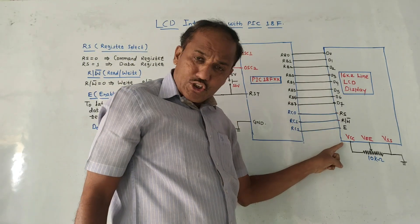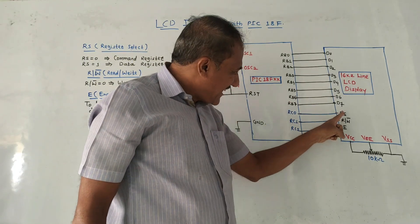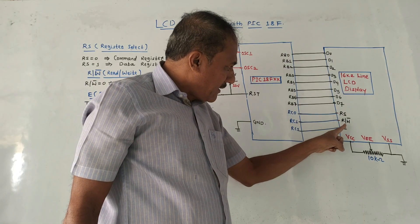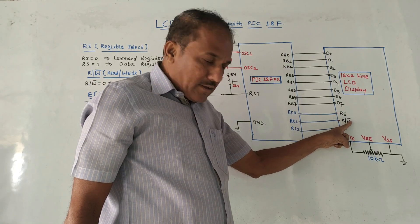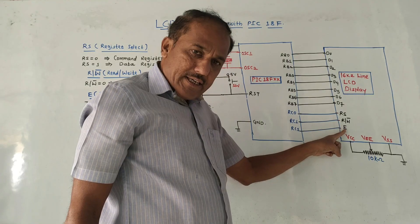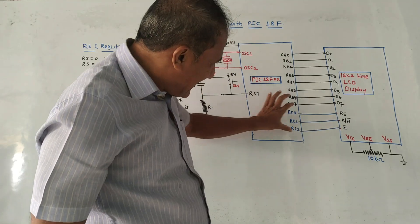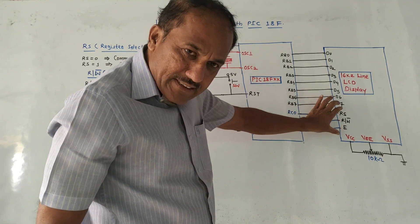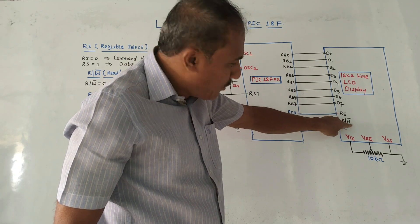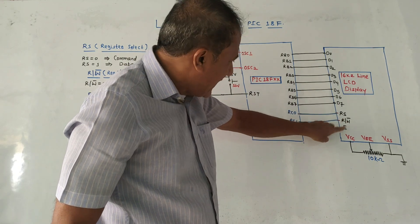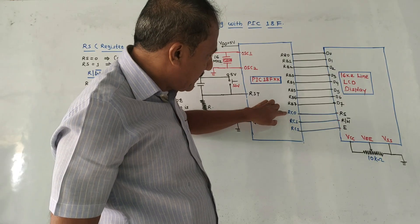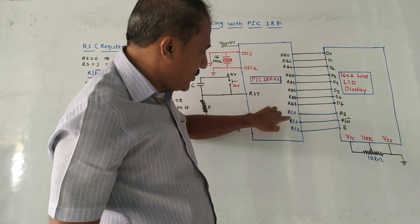Again, three extra pins are shown: that is the RS pin, RW (R-slash-W), and E that is the enable pin. These three pins — RS, R-slash-W, and E — are connected to Port C, that is pin numbers RC0, RC1, and RC2.